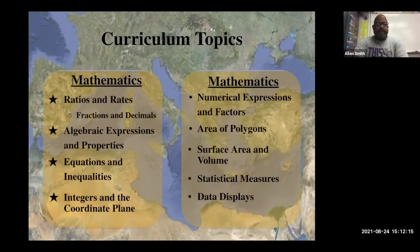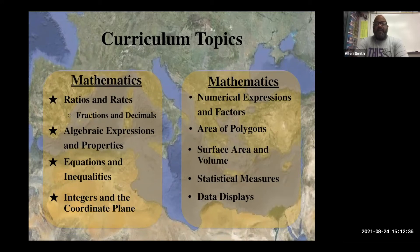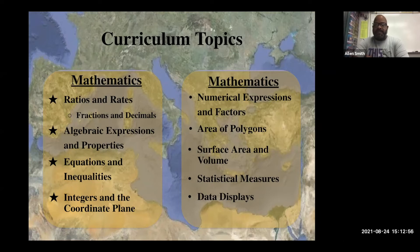In Mathematics, here at Lincoln we go for more bang for the buck, so we do not go in order of the book. We start with ratio and rates, fractions and decimals, then jump into algebraic expressions, equations and inequalities, and integers and the coordinate plane. We also front-load some topics using Khan Academy and Prodigy, and cover numerical expressions and factors, area of polygons, statistical measures, and data displays time permitting.